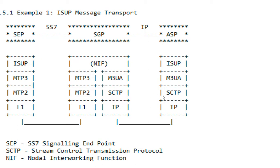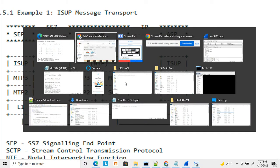I recommend checking my earlier video where it is described why SCTP is introduced and how the communication happens. As a recap: the SCTP association happens first, and above that MTP Layer 3 starts — this is the M3UA connection. Let's see how M3UA looks and what its various layers are when captured in a trace.